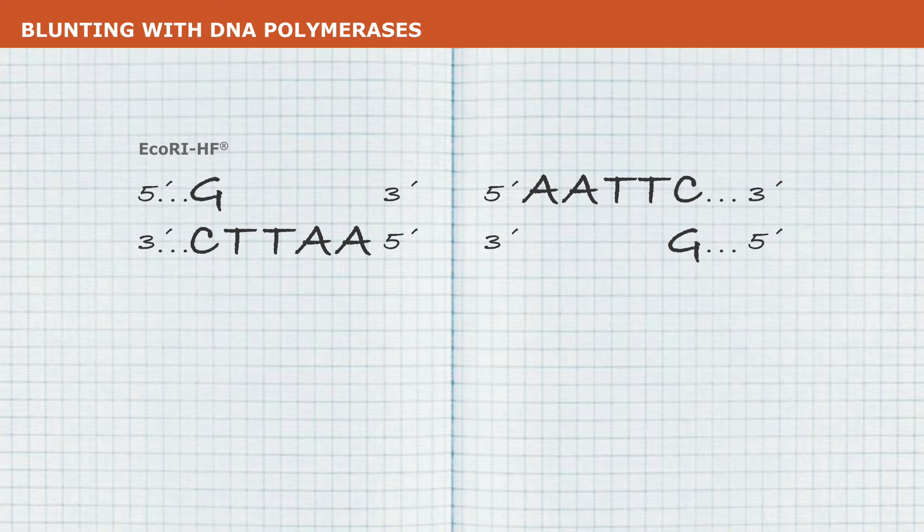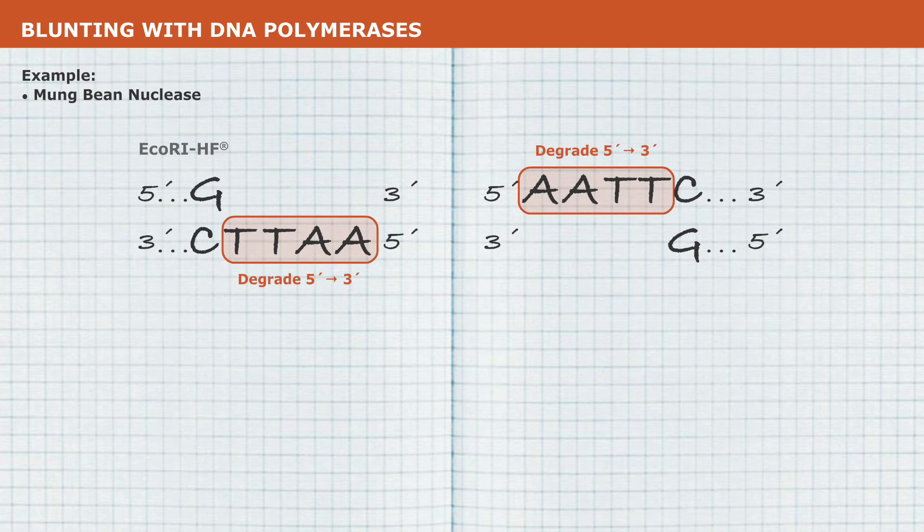If you have specific requirements about maintaining sequence at the blunting site, and you need to digest the 5' overhang, you can use mung bean nuclease to degrade in a 5' to 3' direction. We only recommend the use of this enzyme in this scenario.